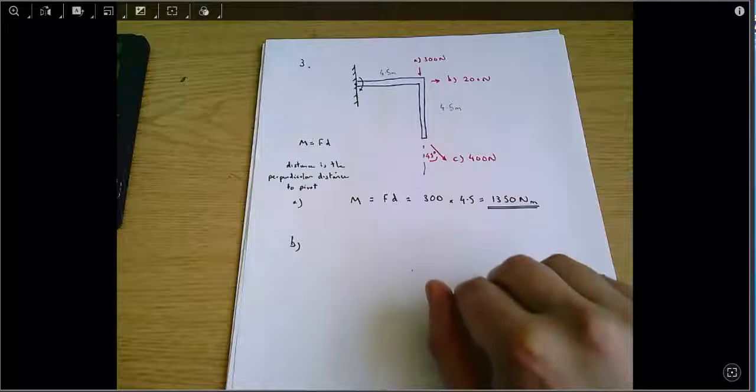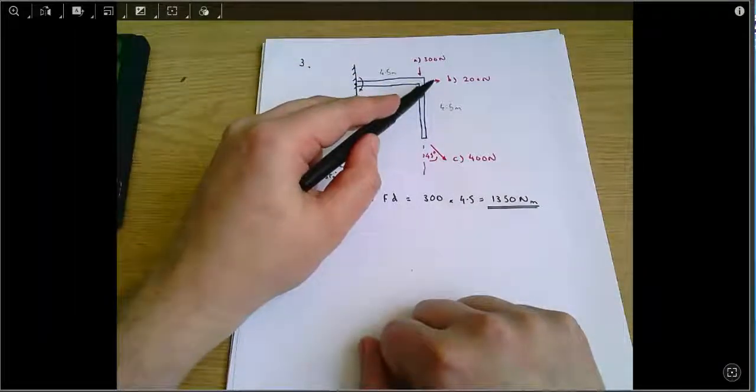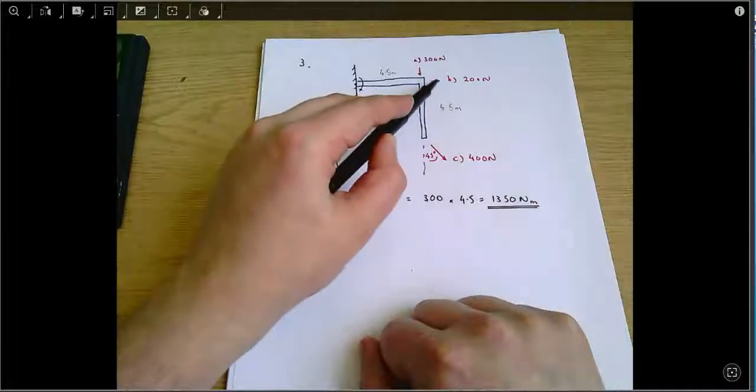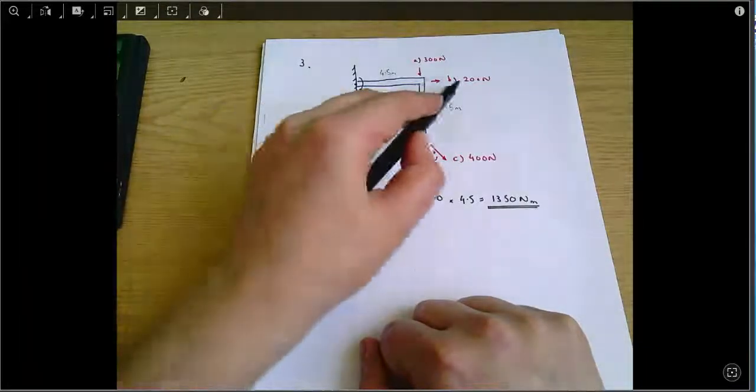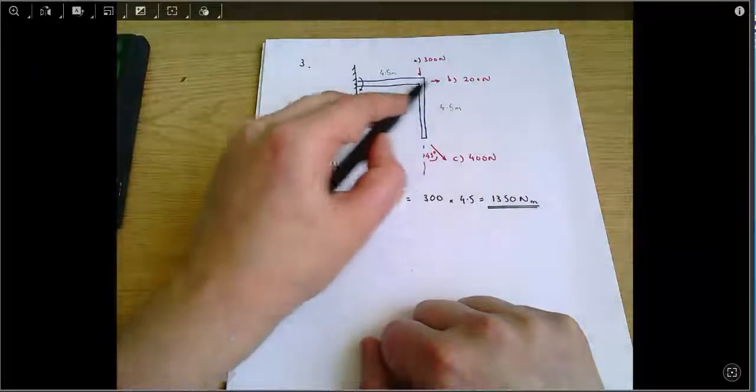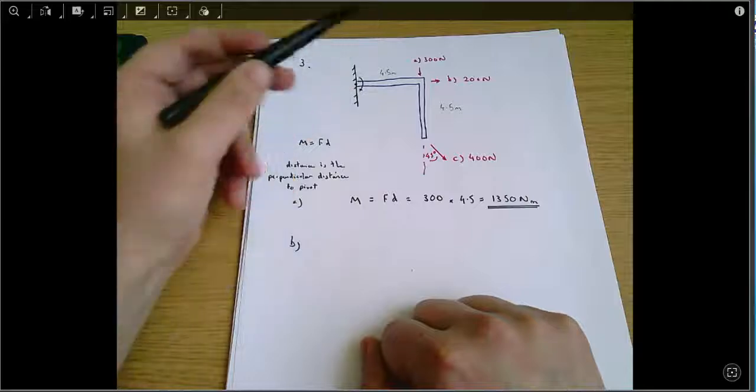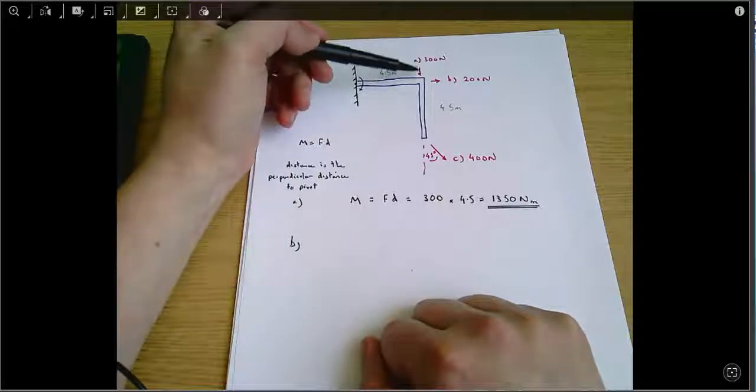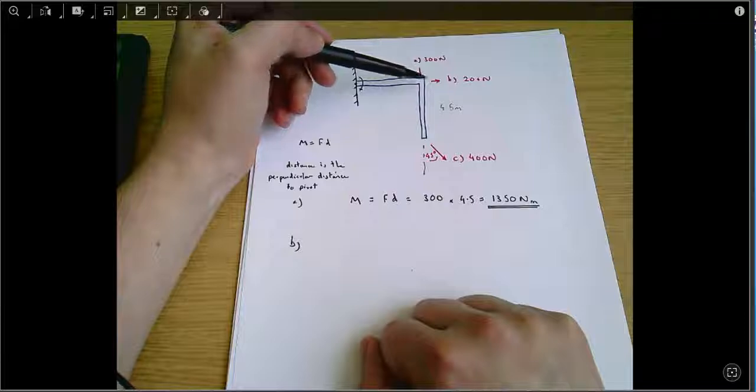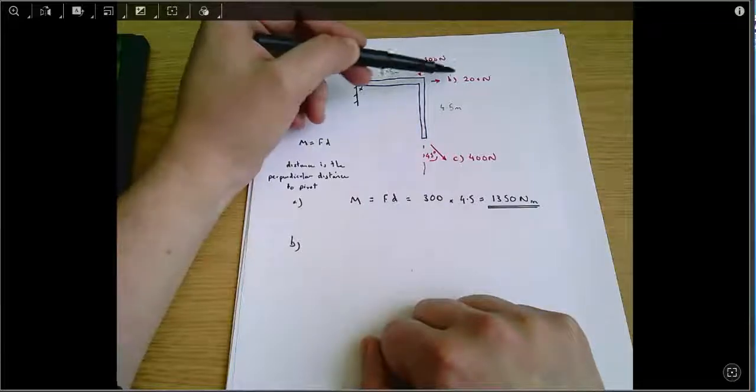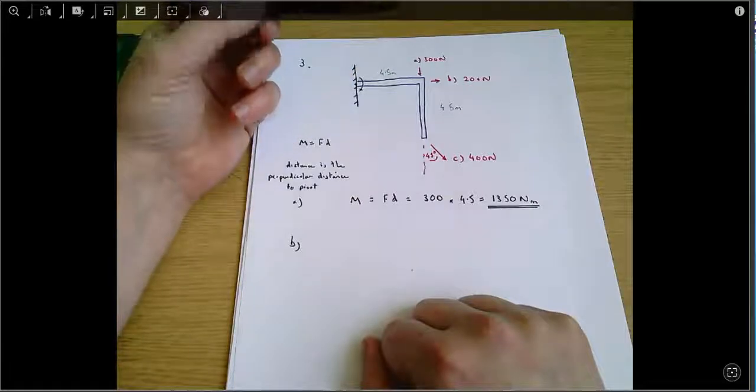For B, the key thing to note here, B, this line that the force acts in goes straight through the pivot. So we can see immediately that it's going to cause no moment. And you can kind of see that. If you imagine you push down on the cantilever arm here, you'd expect it to bend a bit. If you pull on it in that direction, you don't expect anything to bend. And that's an intuitive way of seeing there's no moment.